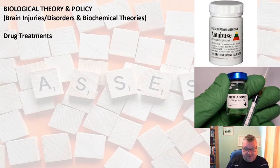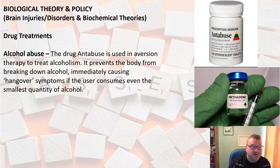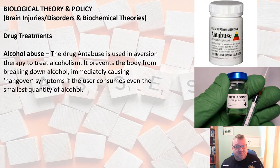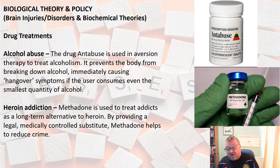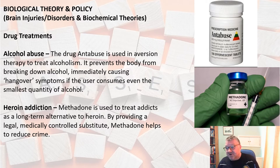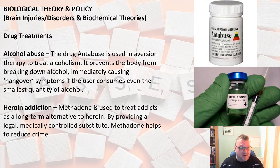Looking at drug treatments: alcohol is linked to many crimes, and the drug antabuse is used in aversion therapy to treat alcoholism — it prevents the body from breaking down alcohol, giving immediate hangover symptoms even from the smallest amount. For heroin addicts, whose addiction can lead to shoplifting and petty theft, methadone is used as a long-term alternative, providing a legally controlled medical substitute that helps reduce crime.